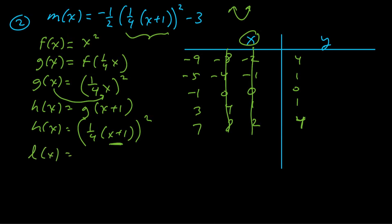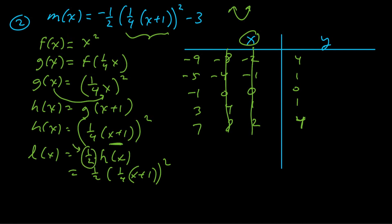Building further, l(x) = ½·h(x), so l(x) = ½(¼x + 1)². The one-half is not grouped with x, so it affects the y coordinates — a vertical shrink by a factor of one-half. We multiply all y coordinates by one-half.